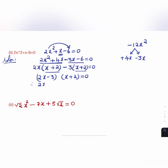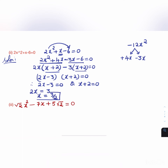Therefore 2x - 3 = 0 or x + 2 = 0. So 2x = 3, giving x = 3/2, or x = -2. These are the two roots of the given quadratic equation.